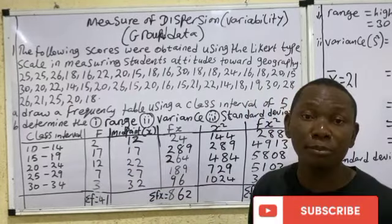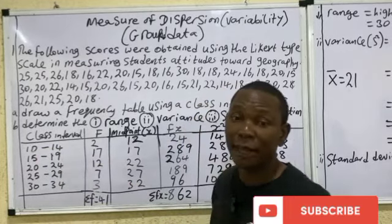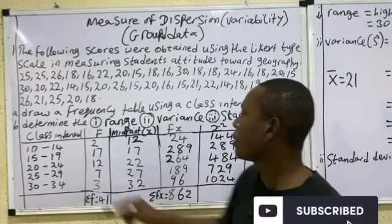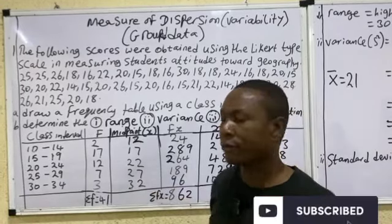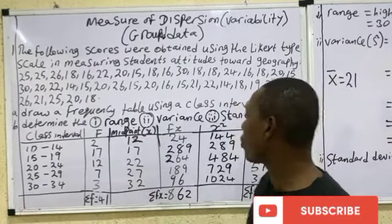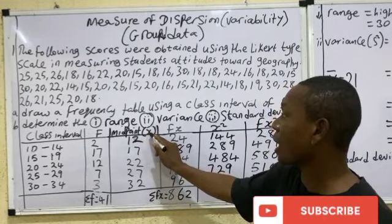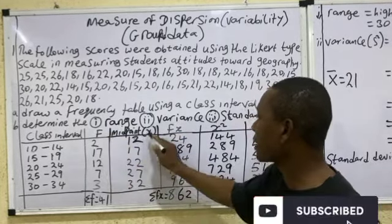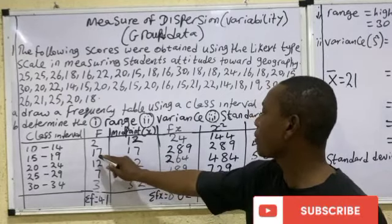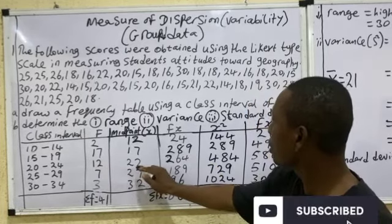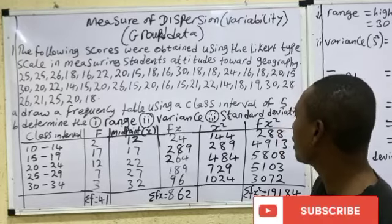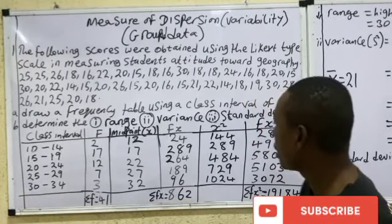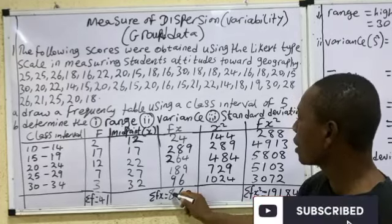Next, calculate the midpoint for each class interval by adding the two boundary values and dividing by 2. So 10 + 14 = 24, divided by 2 gives 12; and 15 + 19 = 34, divided by 2 gives 17, and so on. The midpoint is x. Then find fx by multiplying the frequency by x — for example, 17 times 17 equals 289, and 12 times 22 equals 264. The summation of frequency is 41 and the summation of fx is 862.